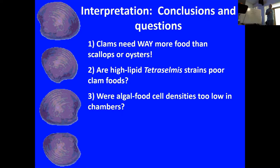Every oyster farm in the country is using PLY-429 in their hatcheries and loving it. Clam farmers, not so much. Clams need a little more work on their biochemical nutrition. At the low feedings, it seems like we maybe weren't even starting the feeding process.